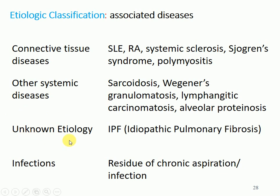Sometimes the etiology may be unknown. As mentioned in the previous session, mostly the causes of these diseases are known, but one example of unknown cause is idiopathic pulmonary fibrosis — 'idiopathic' meaning unknown. Someone has pulmonary fibrosis of unknown cause, and this covers a large part of these diseases.